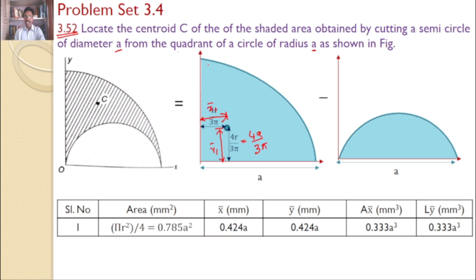For serial number 1, it is a quarter circle of radius A. So area equals πR² by 4, where R equals A, which gives the value 0.785 A². The centroid is 4A by 3π, which gives the value 0.424 A for both X bar and Y bar. These are used to compute A·X̄ and A·Ȳ.